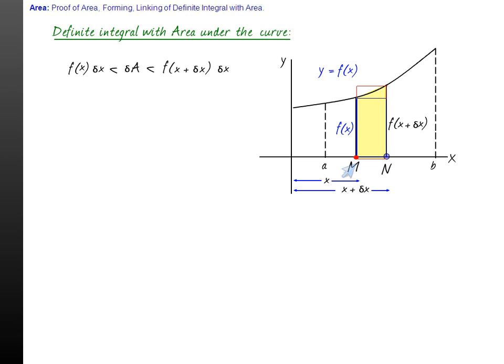Now let us divide by delta x. So we will get f(x) less than delta A by delta x less than f of x plus delta x.